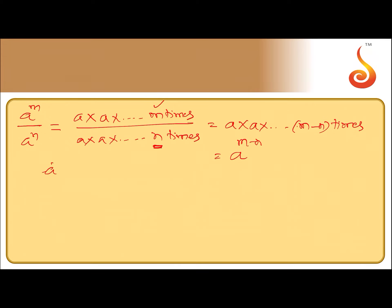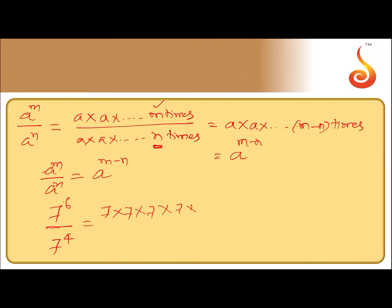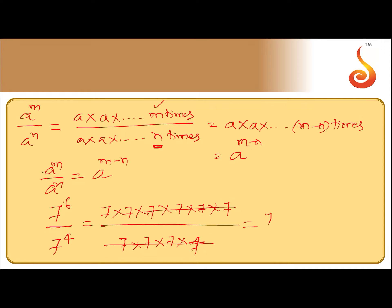So, a^m divided by a^n equals a^(m-n). As an example, consider 7^6 divided by 7^4. 7^6 means 7 multiplied 6 times, divided by 7 multiplied 4 times. When you cancel four 7's, you get 7^2, which is the same as 7^(6-4).